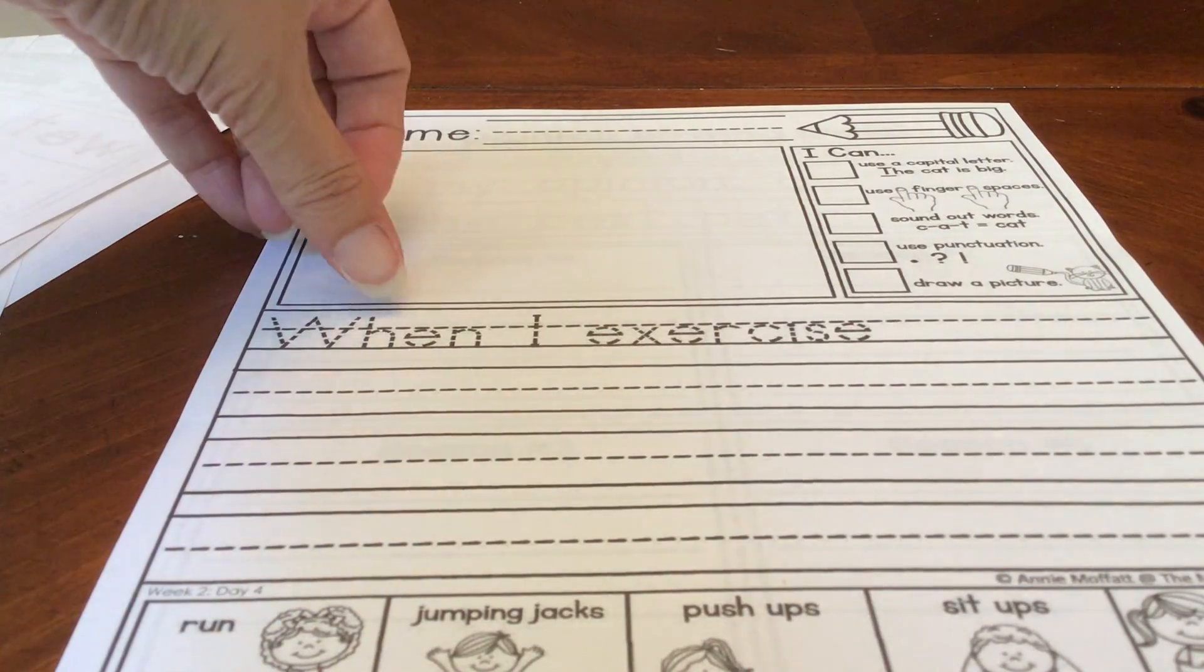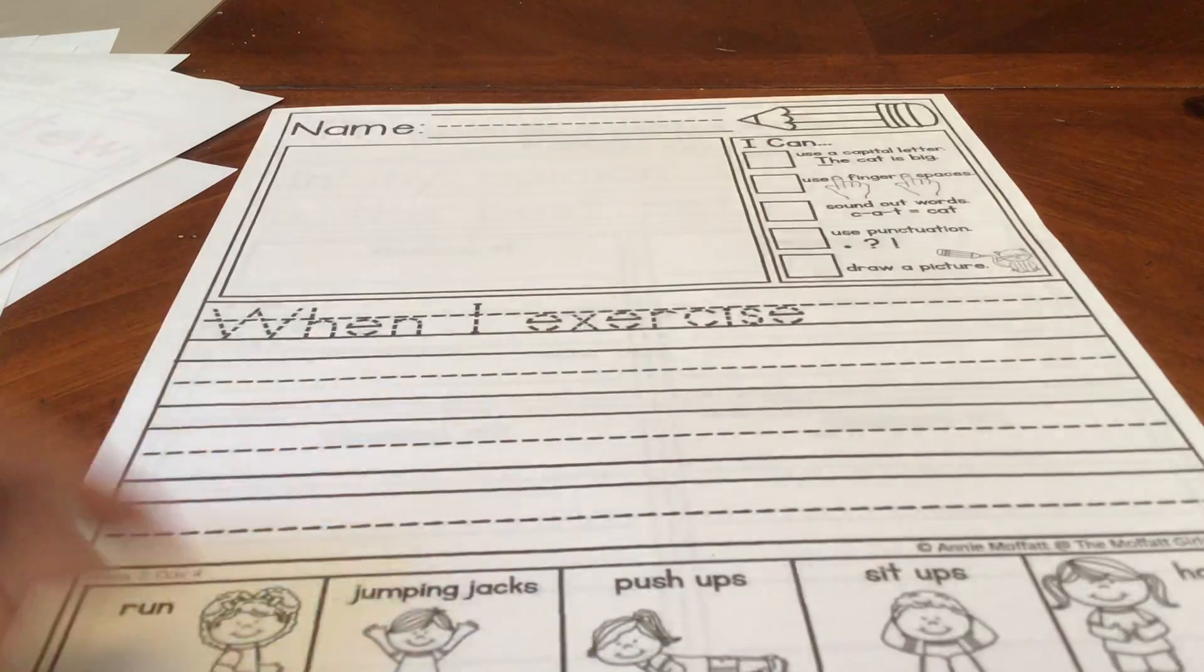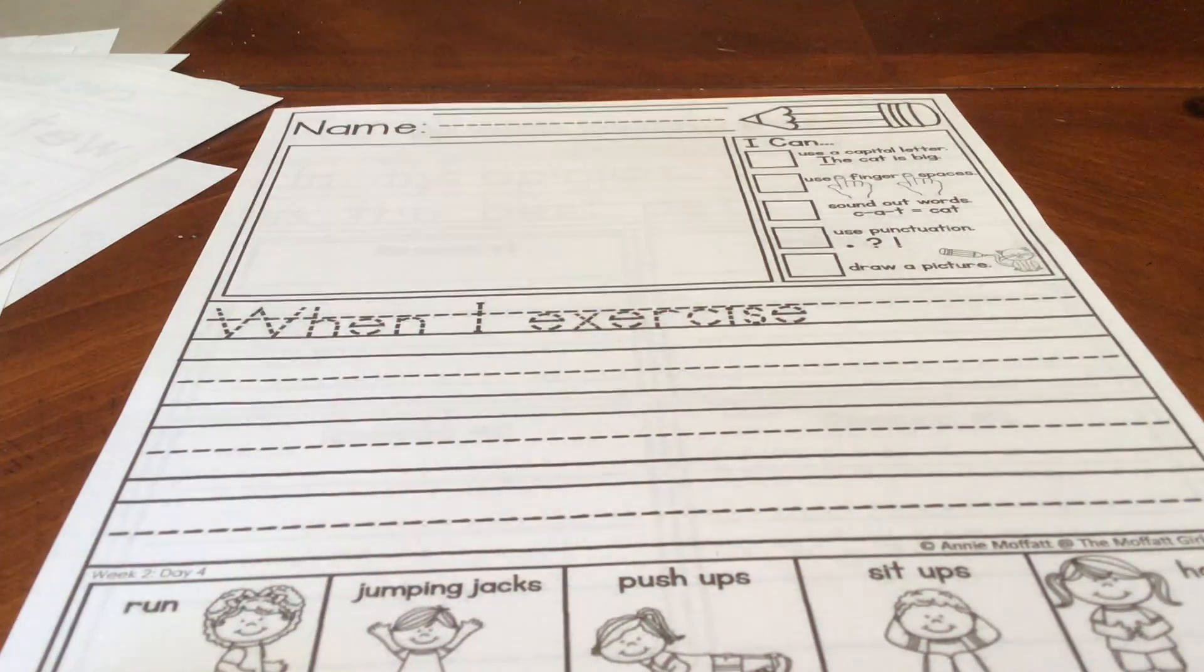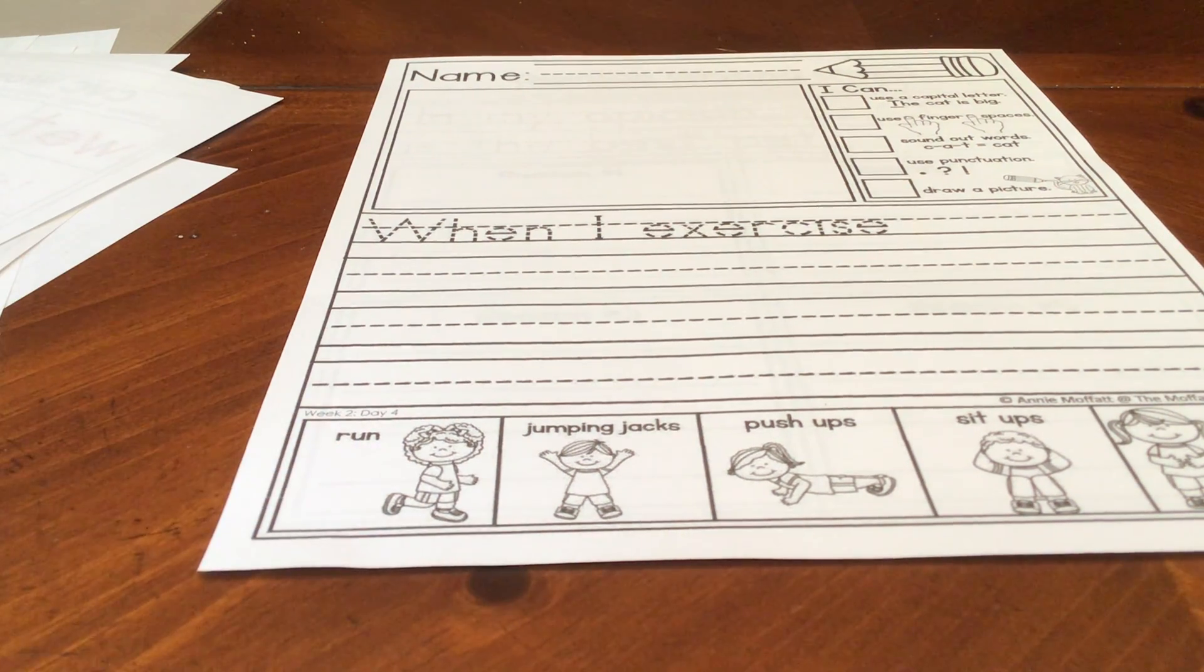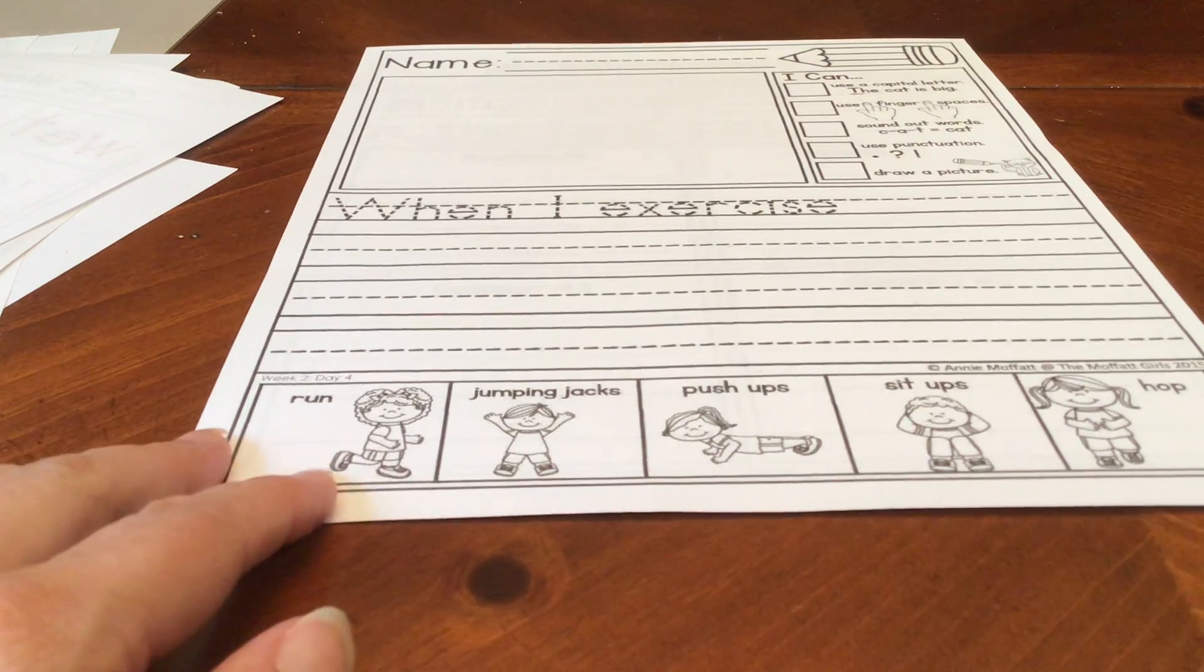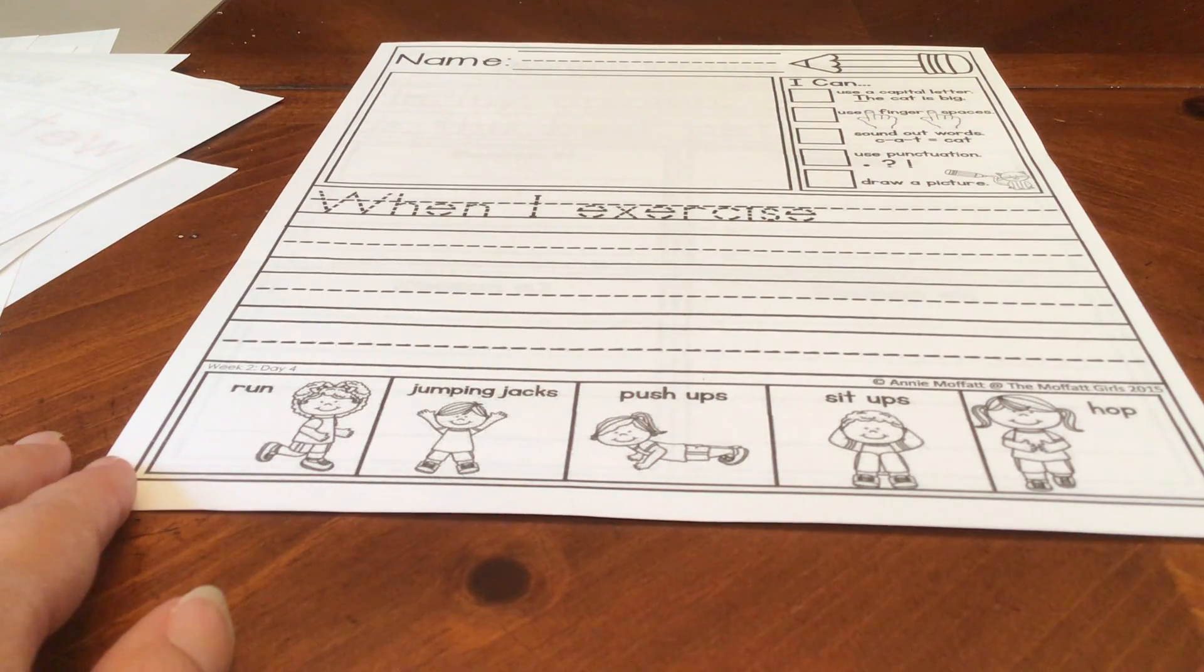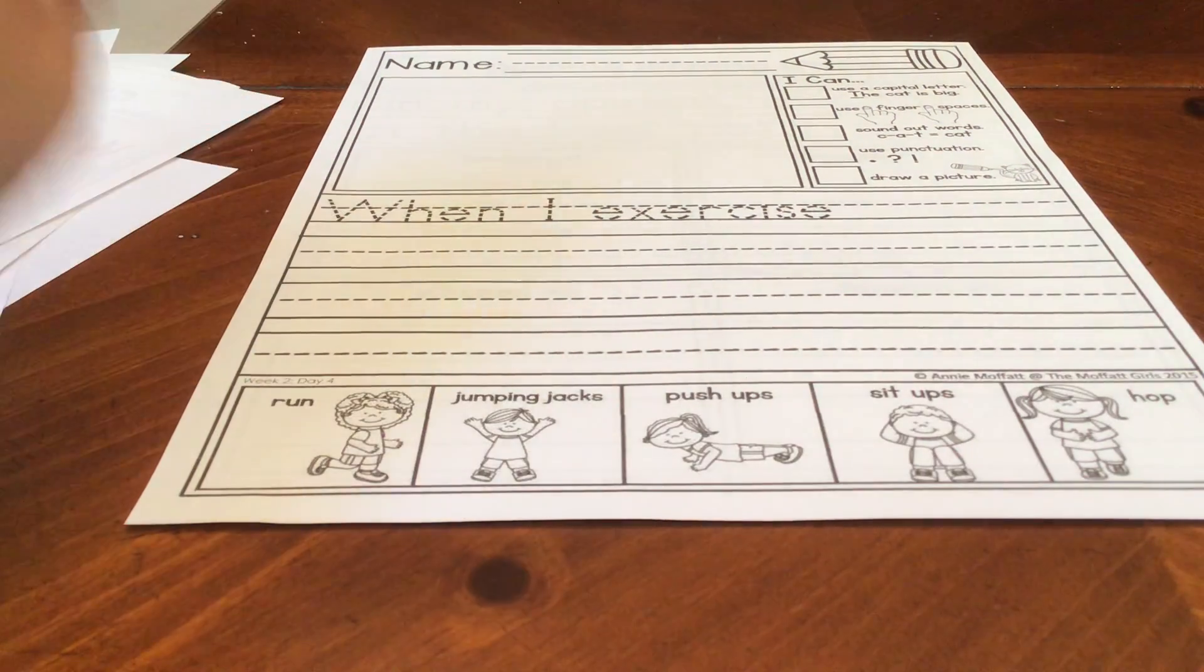Let's read what they wrote. When I exercise. You're going to pretend that it's a blank. When I exercise, then you've got to tell me something about when you exercise. When I exercise, it makes me feel strong. When I exercise, I like to run. When I exercise, I do push-ups. When I exercise with my mom, we have a good time. So you're going to write sentences about when you exercise.